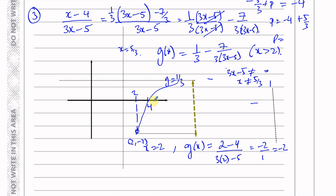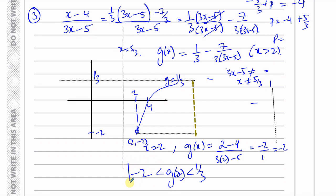So the range is limited between the horizontal asymptote and the value at x equals 2. We need to find g(2): that's (2 minus 4) over (3 times 2 minus 5), which is minus 2 over 1, equal to negative 2. So the graph only exists between y equals negative 2 and y equals 1 third. The range of g(x) is: the highest limit is 1 third (which it can't reach, as it's an asymptote), and it's above negative 2 (which it also can't reach since x must be strictly greater than 2). So the range is minus 2 less than g(x) less than 1 third.